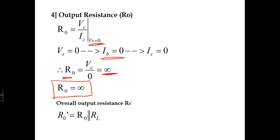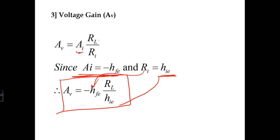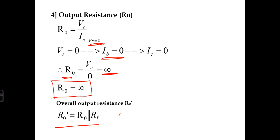Generally, this is R0. The overall output resistance when RL is connected is R0. But we are actually connecting RL. So the overall becomes RL parallel with R0, which approximately equals RL only because R0 is infinity. Infinity means very high value, as if not connecting anything. Therefore, R0 prime is approximated as RL.